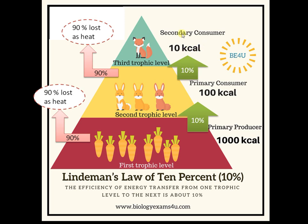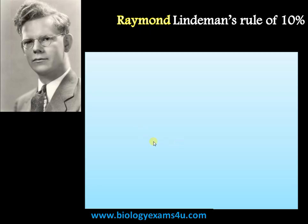Only 10% is transferred to the next trophic level — that is only 10 kilocalories transferred to the secondary consumer level. This is called the law of 10%. The efficiency of energy transfer from one trophic level to the next trophic level is just 10%.